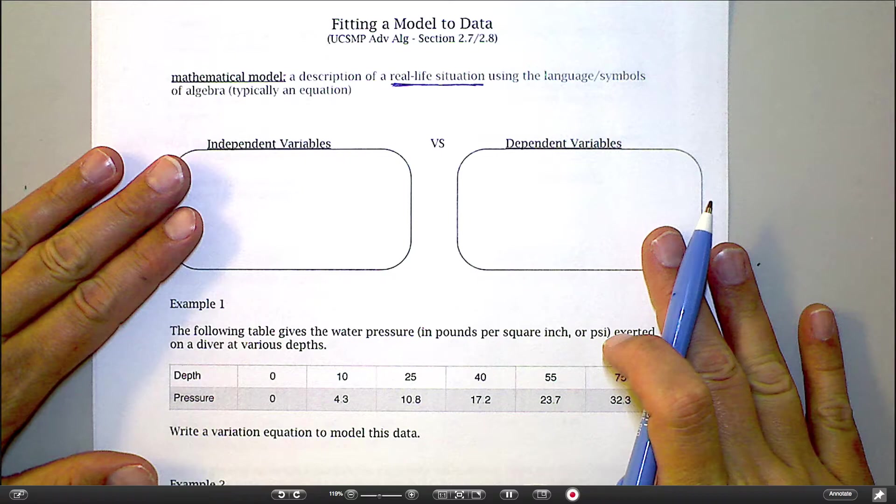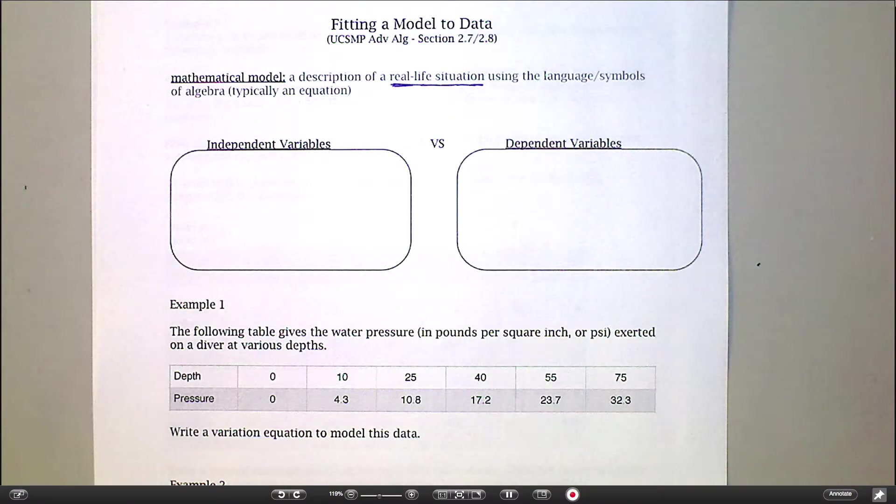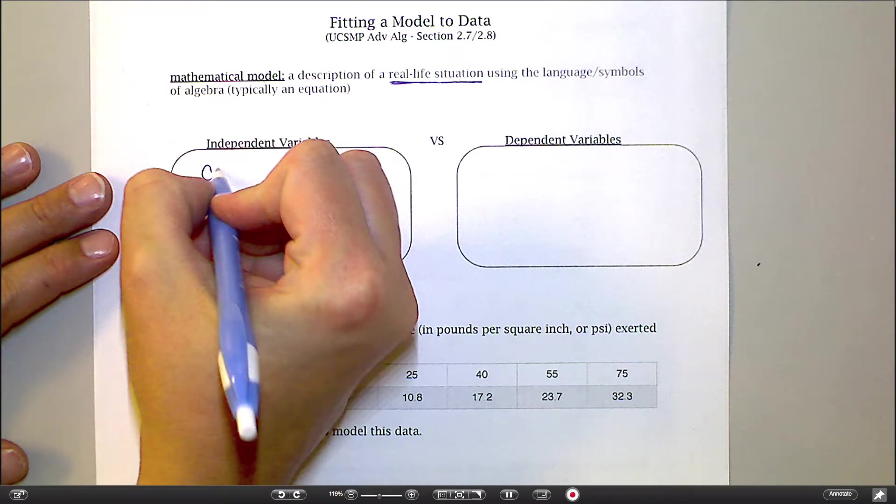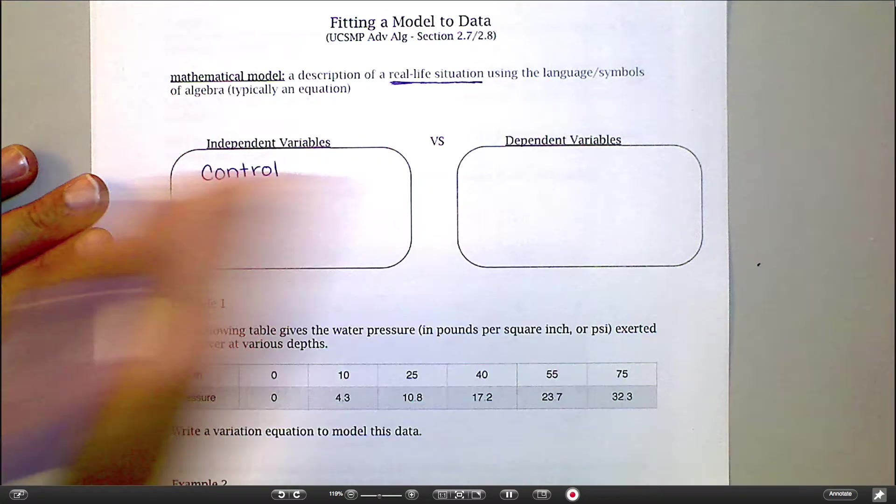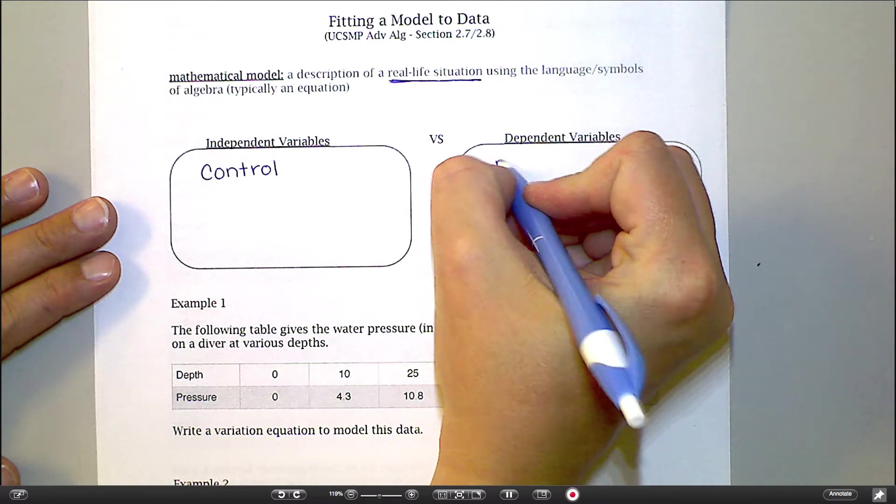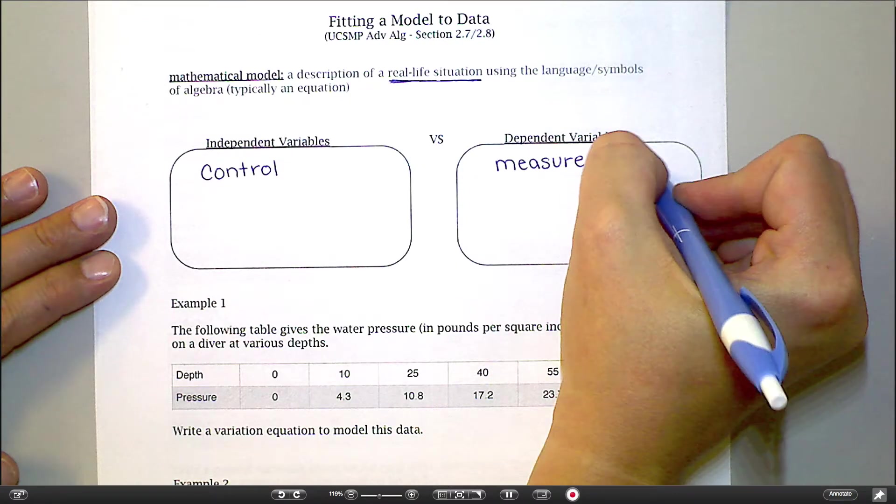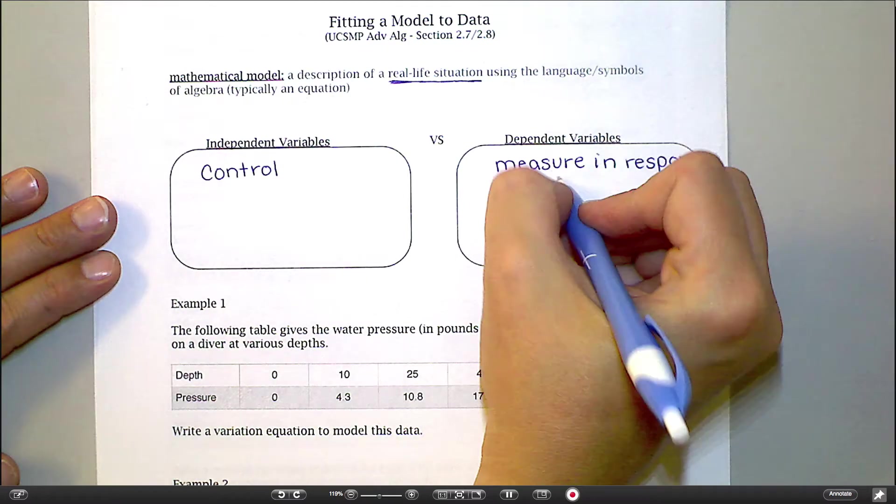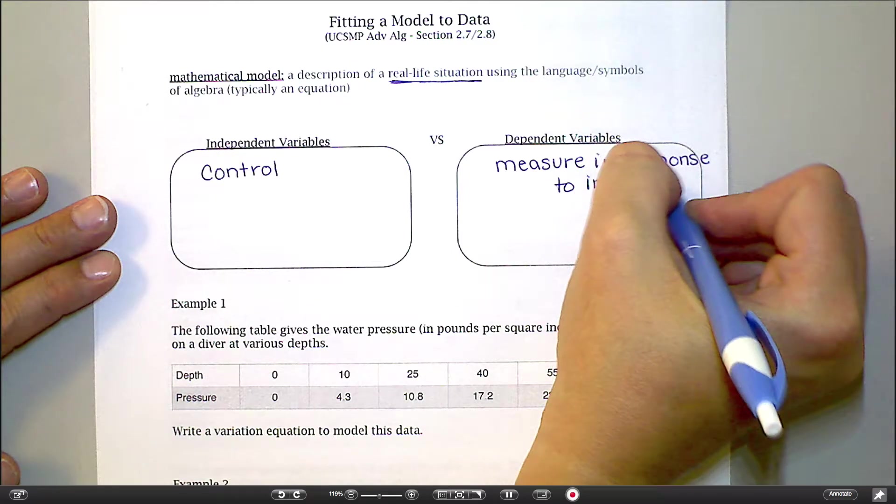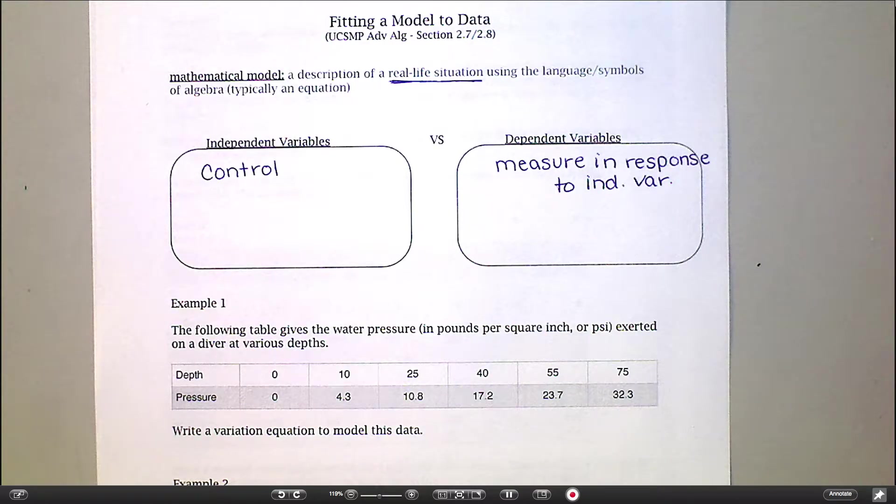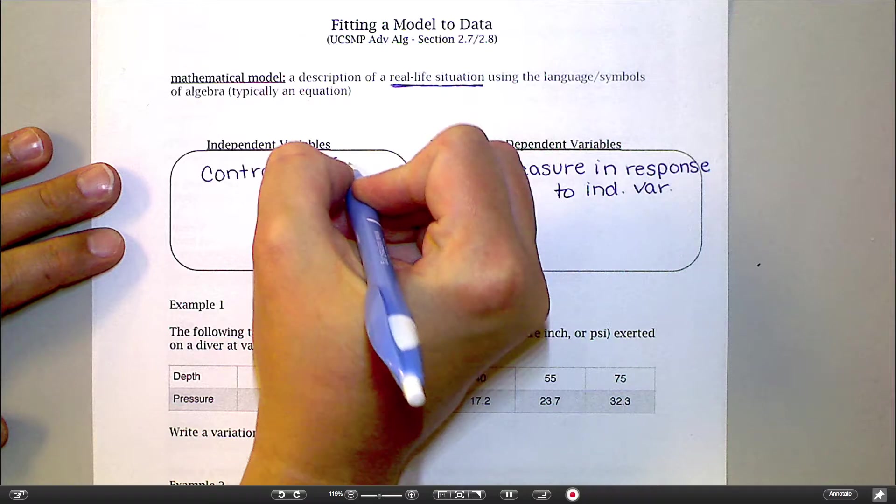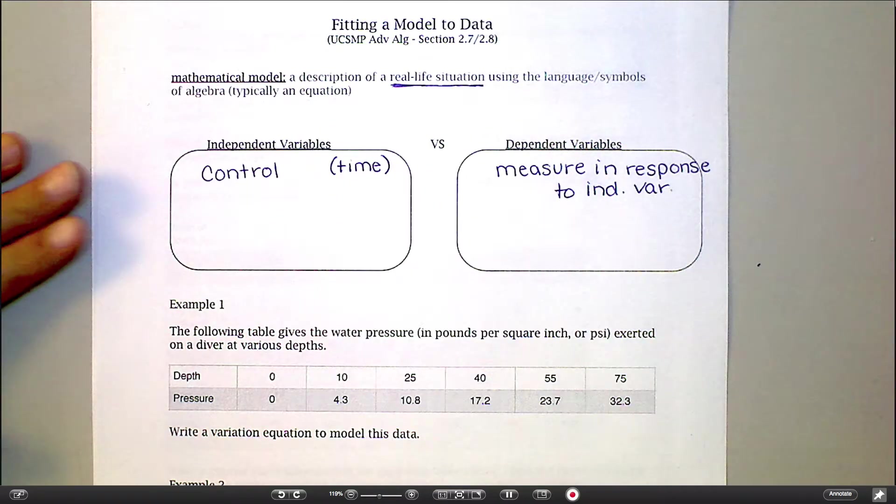Just a couple of things you should know. We've already talked about independent variables and dependent variables, but in terms of a real-life context, independent variables are always the thing you can control, or at least hold at a steady interval. And dependent variables are the things that you're measuring in response to the independent variable. And when I say control, it's not necessarily that you can manipulate it, but it's the thing that works on its own. And I know that sounds confusing. I'm trying to think of a good example.